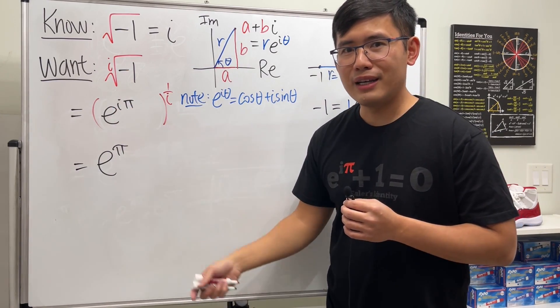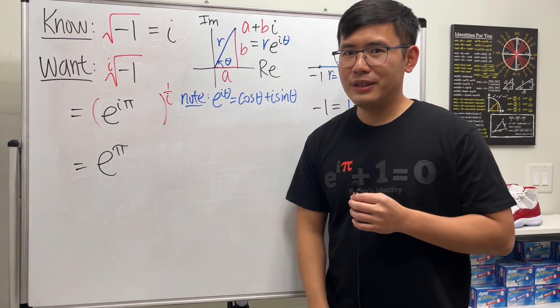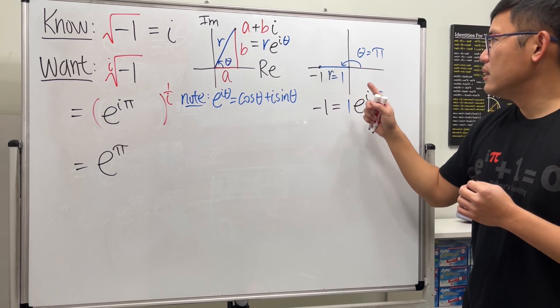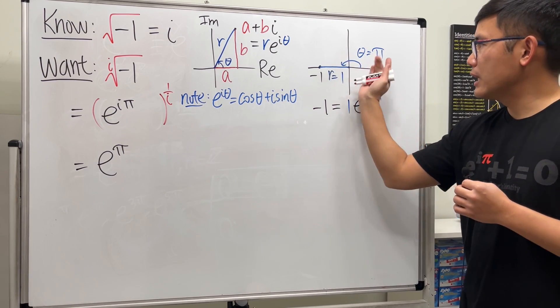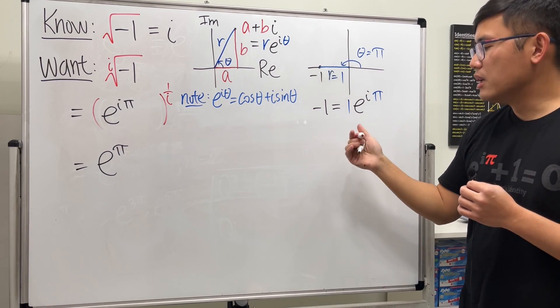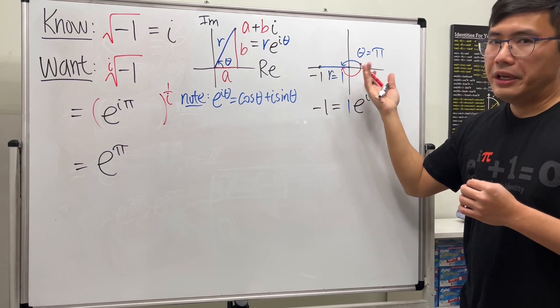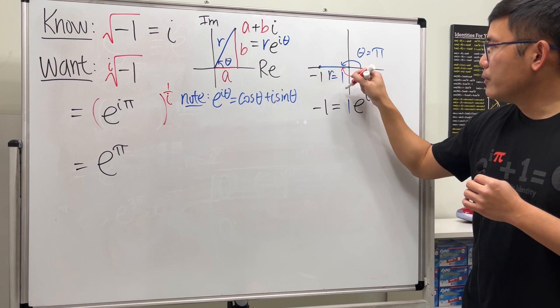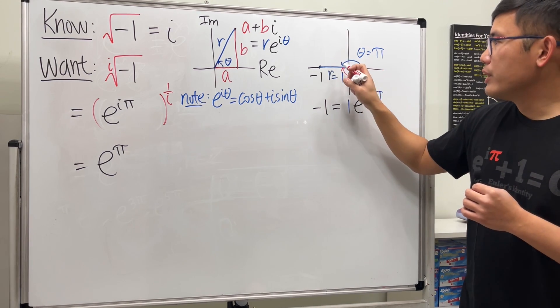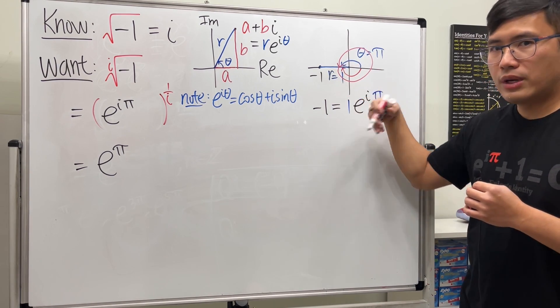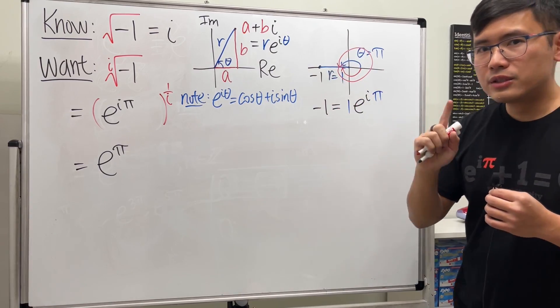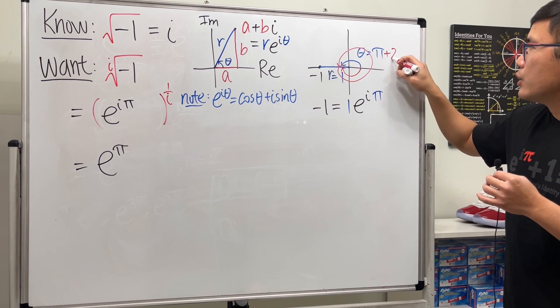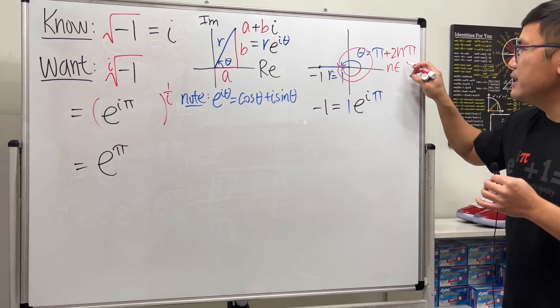In fact, this is not the only answer though, because if you look at this picture again, pi is not the only angle that can give the rotation from here to here. We could have gone the other direction—in that case it would be negative pi. Or if you want to keep rotating, once you get to pi, you can rotate two pi again and keep on going, or the other way. So the whole angle for all this is not just pi, but we also have to add two n pi where n is an integer.